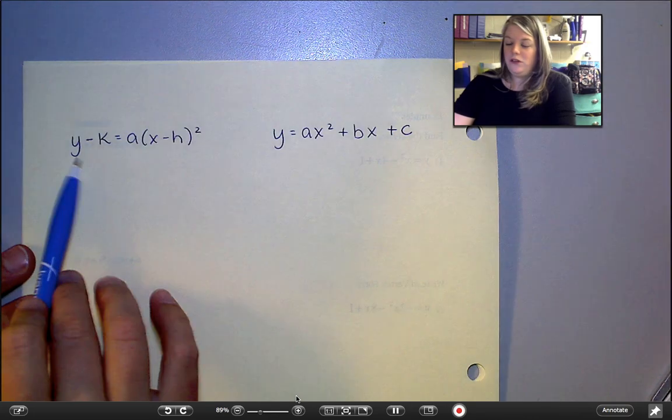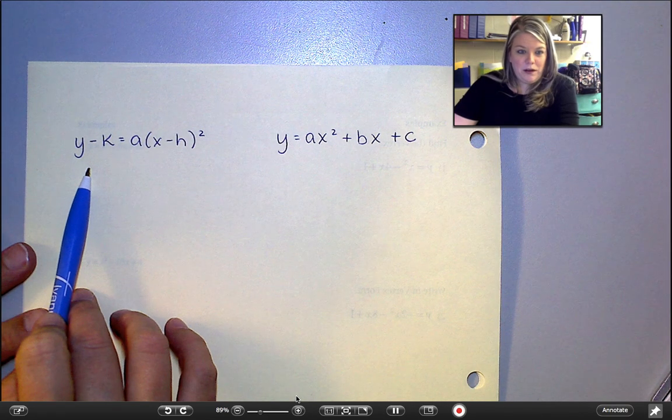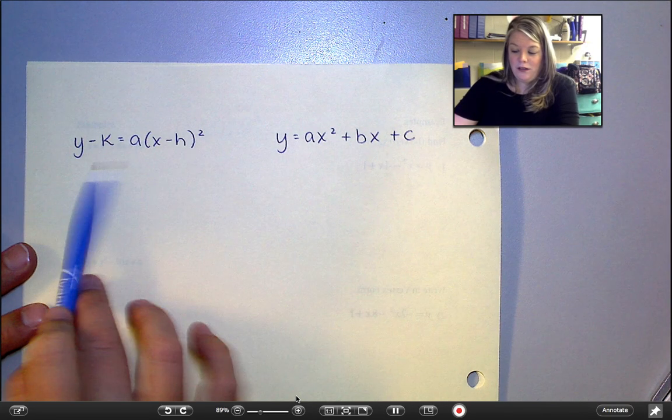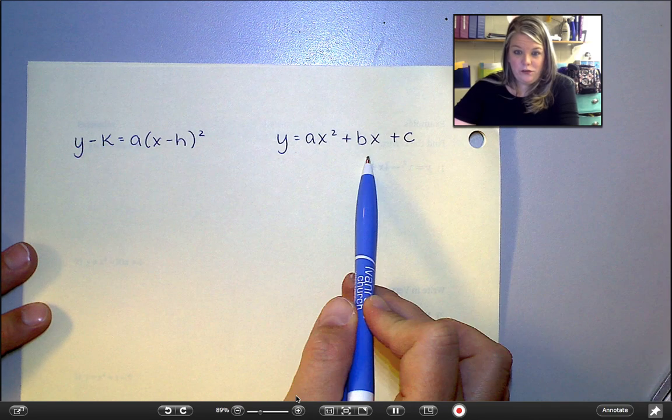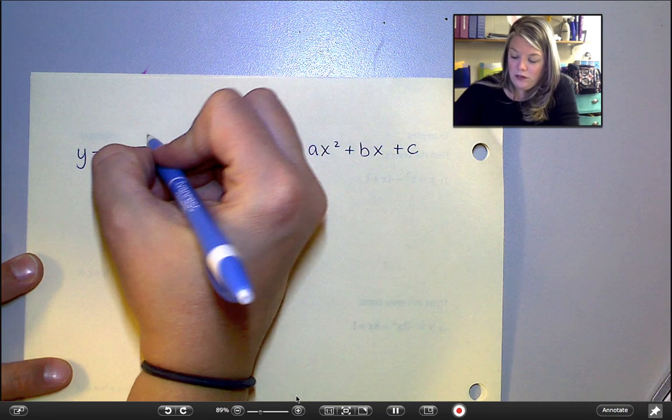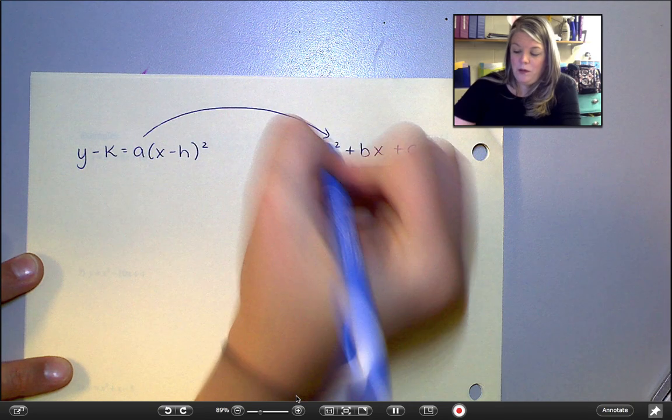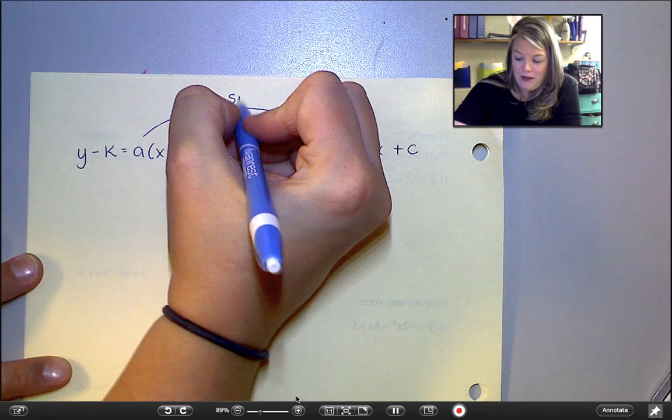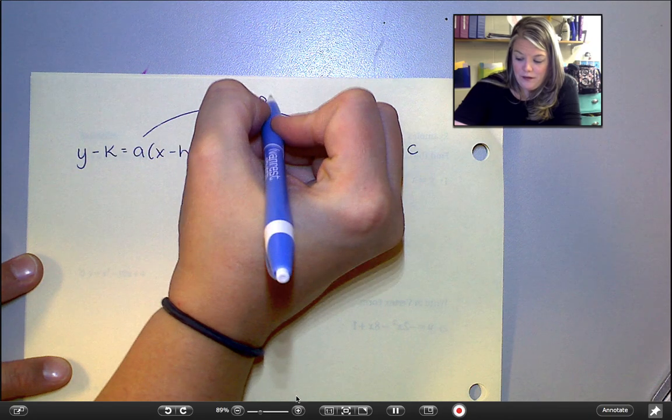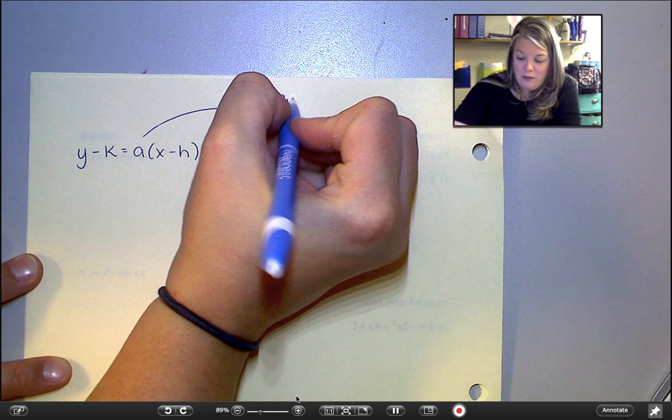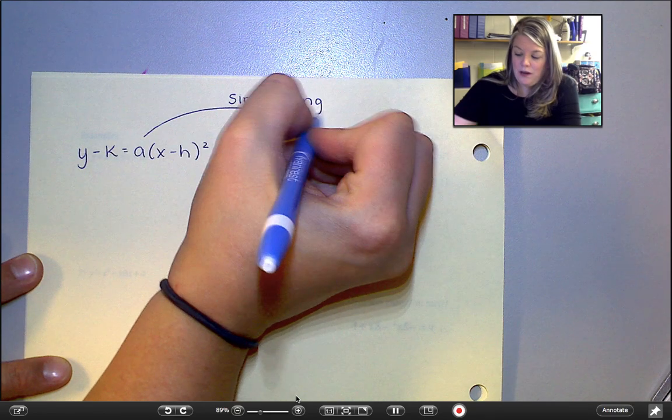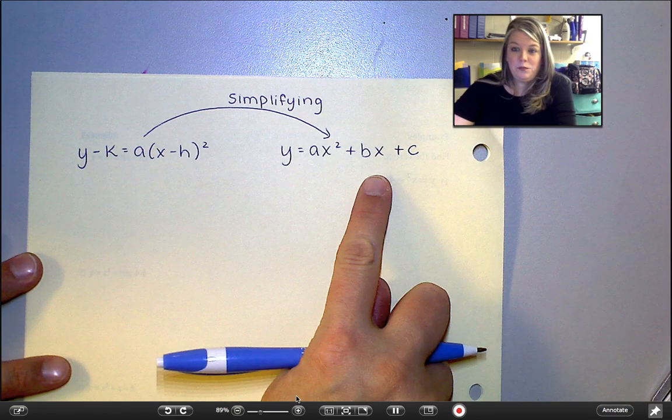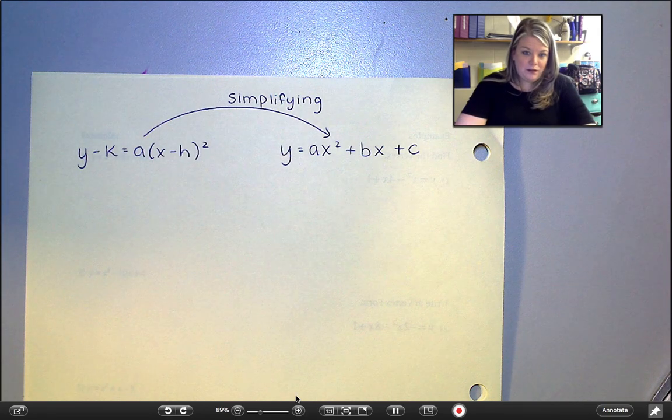So we've already checked. These are the two forms that a quadratic could be written in. They could be written in vertex form or what's called standard form. And what we did earlier this week was convert this way. We went from vertex form to standard form just by simplifying. So that was where we foiled and we made everything look pretty. But to get from this to this, we just had to do the math. We just had to clean things up.